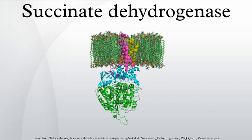SDHA contains a covalently attached flavin adenine dinucleotide cofactor and the succinate binding site, and SDHB contains three iron-sulfur clusters. The subunits form a membrane-bound cytochrome B complex with six transmembrane helices containing one heme B group and a ubiquinone binding site, which can be seen in image 4. Two phospholipid molecules, one cardiolipin and one phosphatidylethanolamine, are also found in the SDHC and SDHD subunits, serving to occupy the hydrophobic space below the heme B, as displayed in image 3.